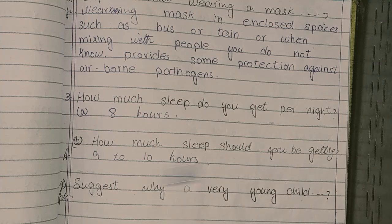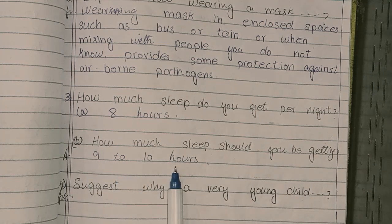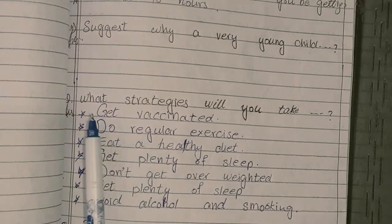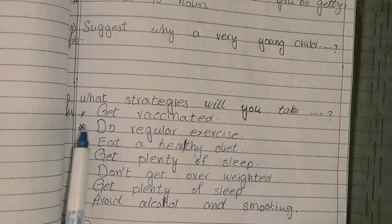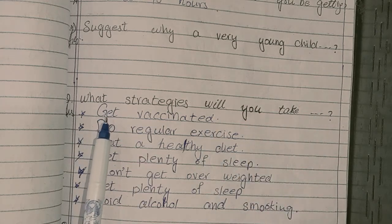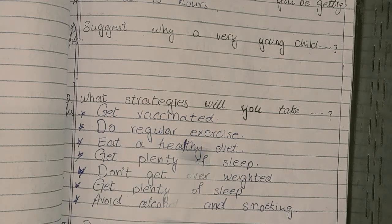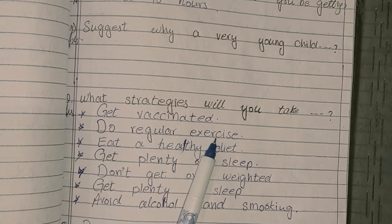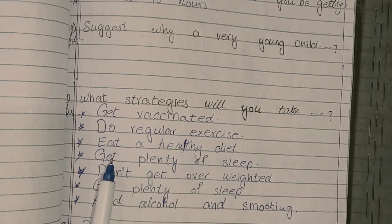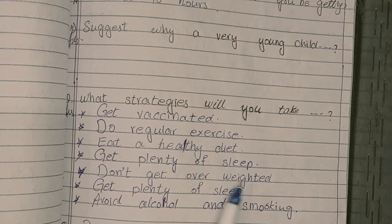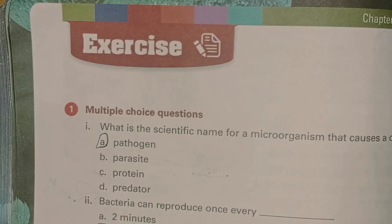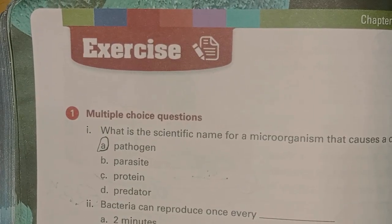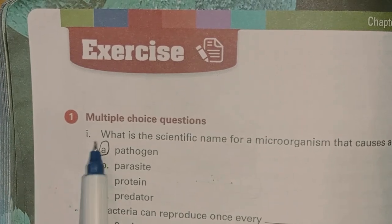What strategies will you take? Get vaccinated, do regular exercise, eat a healthy diet, get plenty of sleep, don't get overworked, avoid alcohol and smoking. Now go to page number 58 where the exercise is.